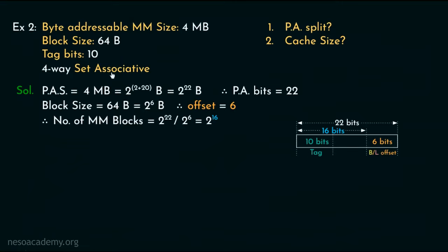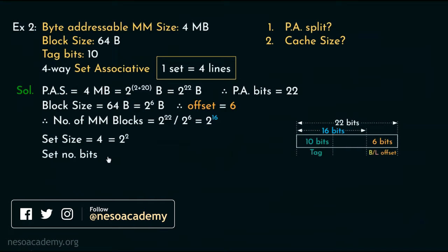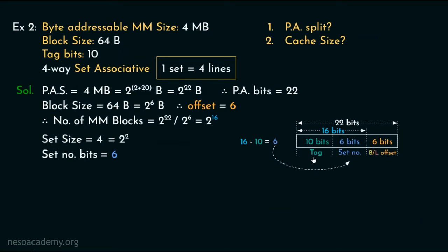With a 4-way set associative cache, every set will have 4 lines (2 squared). Therefore the set size is 2 squared. We find the set number bits by subtracting the tag bits from the block number bits: 16 minus 10 equals 6. So 6 bits are used for the set number portion. Therefore from the 22-bit physical address: 6 least significant bits for block or line offset, 6 bits for set number, and 10 bits for tag — that is the physical address split.